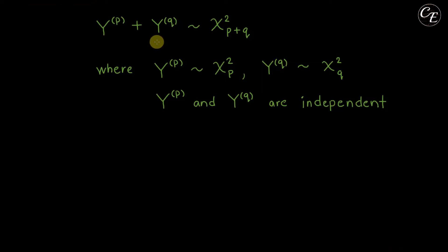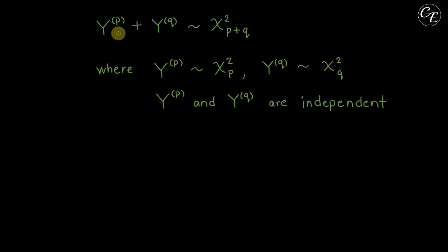Hello everyone. In this video I am going to show you how to prove the theorem that if we have two random variables which have chi-squared distribution, then their sum also has a chi-squared distribution, but with degrees of freedom equal to the sum of their degrees of freedom.